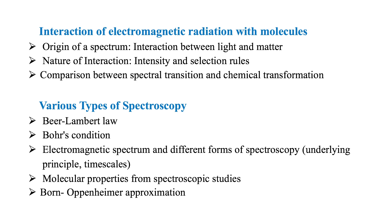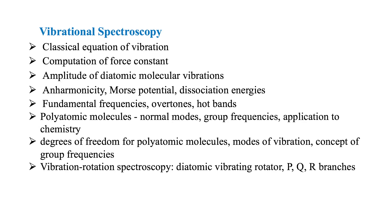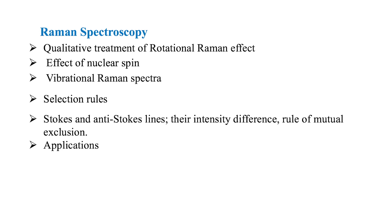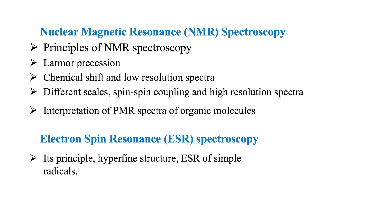These include selection rules, characteristics of a spectrum, broadening of a spectrum, time scales, distance, etc. Then we will move on to study in detail about specific forms of spectroscopy like rotational spectroscopy, vibrational spectroscopy, Raman spectroscopy, electronic spectroscopy, NMR spectroscopy and ESR spectroscopy. In this course, the fundamental principles of the different forms of spectroscopy will be elaborated in a unified way from both theoretical and experimental viewpoints.